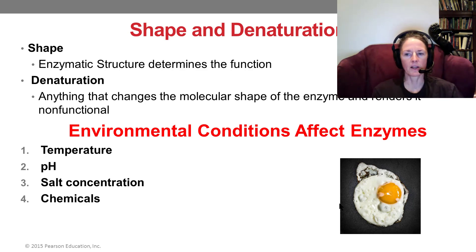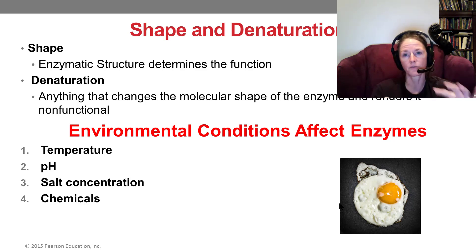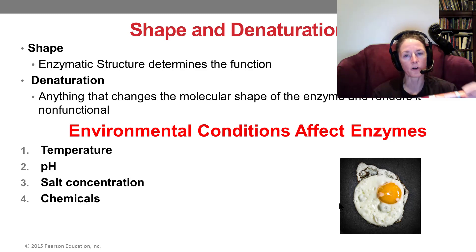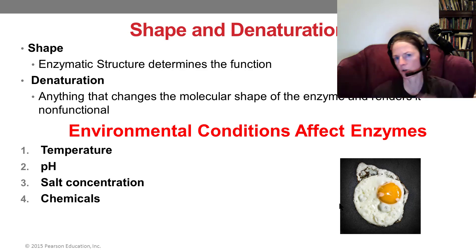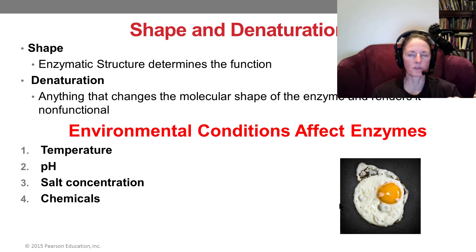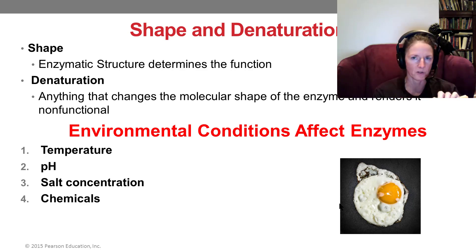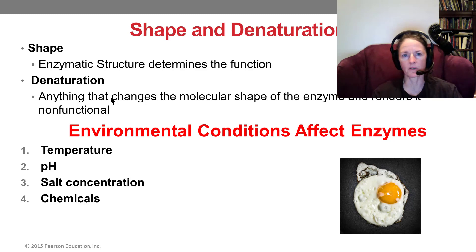Enzymes are proteins with complex tertiary and quaternary structures, and shape is everything — it's what allows the enzyme to have an active site that fits its specific substrate. Enzymes have specificity: amylases work on sugars and starches, proteases work on proteins, and lipases work on fats. If you denature the enzyme — cause the protein to unfold and lose its shape — it loses its function.